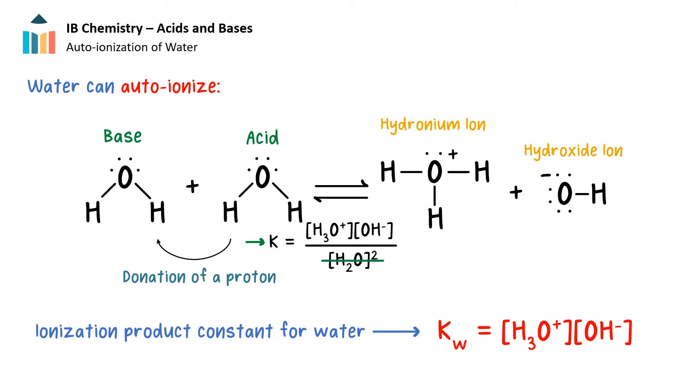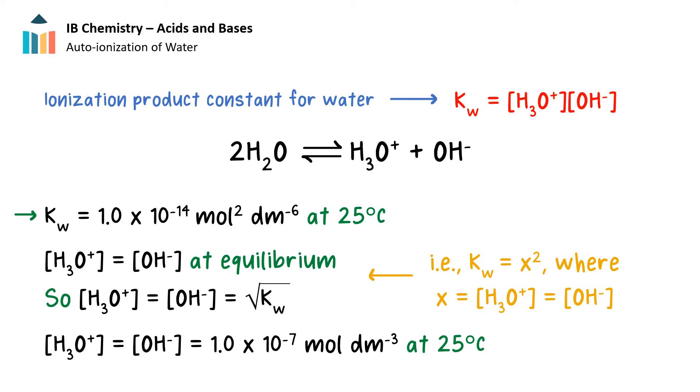Recall that pure liquids, including water, are removed from the equilibrium expression, so the expression for Kw is shown here, the concentration of hydronium ions times the concentration of hydroxide ions. The value of Kw, the ionization constant for water, at 25 degrees Celsius, has a value of 1 times 10 to the minus 14. Examining the balanced equation we showed earlier, we can see that a transfer of one proton keeps all the stoichiometric coefficients at 1. Therefore, in this equation, the concentration of hydronium ions equals the concentration of hydroxide ions. So it can be determined that at 25 degrees Celsius, the concentration of hydronium ions equals the concentration of hydroxide ions equals 1 times 10 to the minus 7 moles per decimeters cubed. Again, this will be relevant in a later video when we discuss pH calculations.